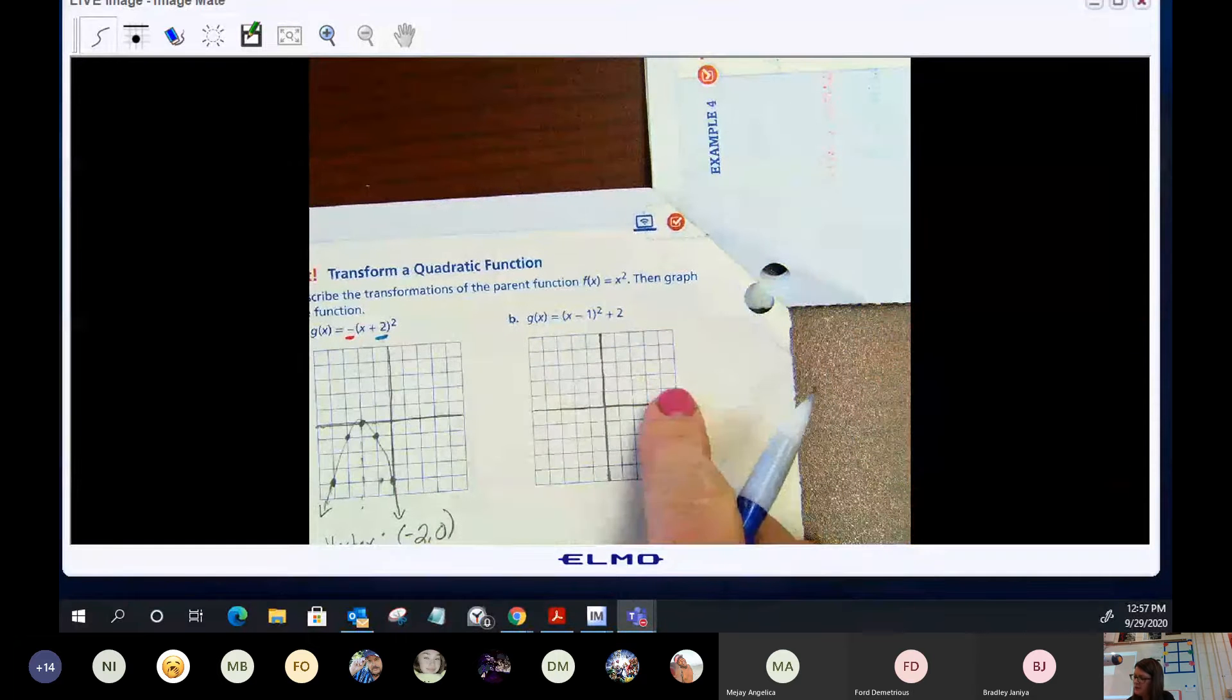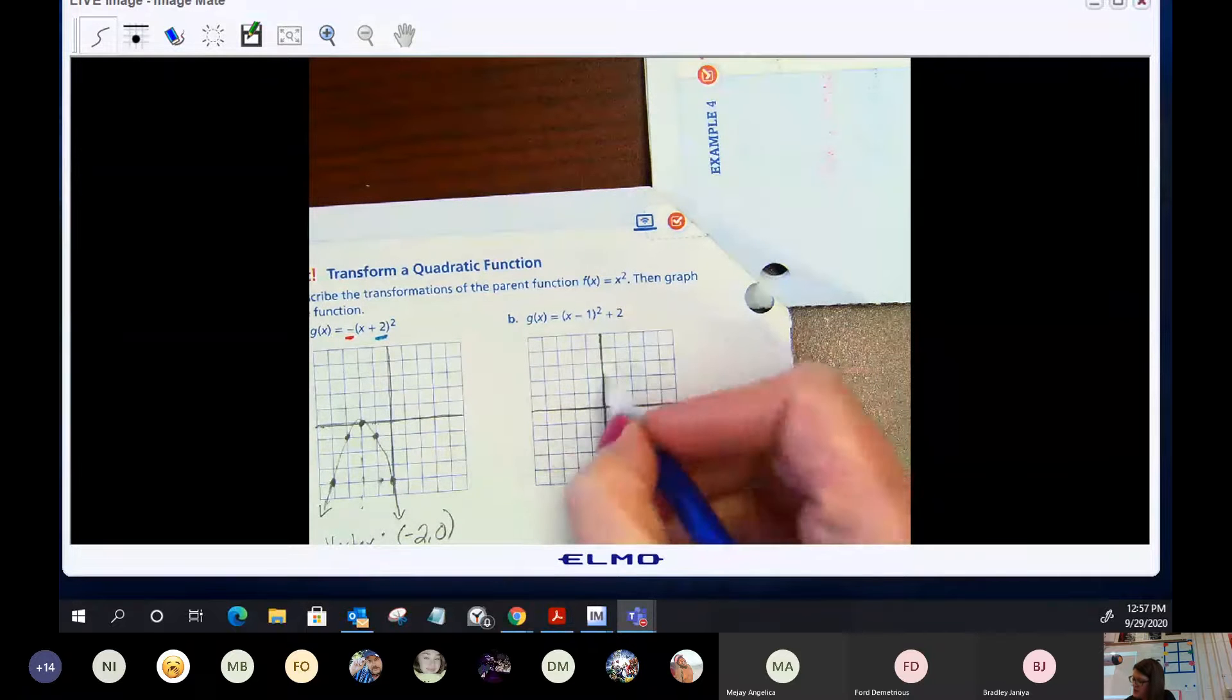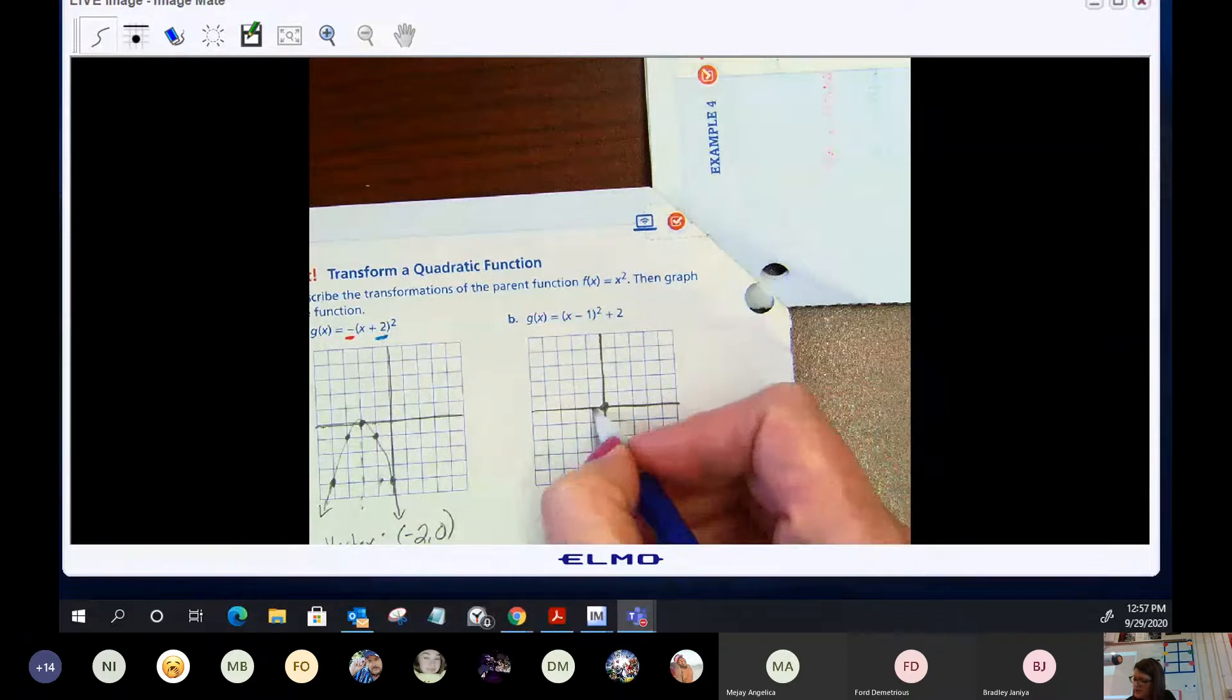I'm going to put on the parent graph. Now the parent graph is just x squared, so you can always start out at a vertex of zero, zero. If I go over, we'll say this is scaled by ones.